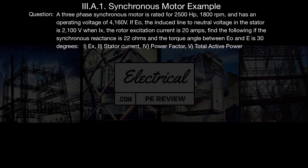The problem states: a three-phase synchronous motor is rated for 2,500 horsepower, 1,800 RPM, and has an operating voltage of 4,160 volts. If EO, the induced line-to-neutral voltage in the stator, is 2,100 volts when IX, the rotor excitation current, is 20 amps, find the following if the synchronous reactance is 22 ohms and the torque angle between EO and E is 30 degrees.